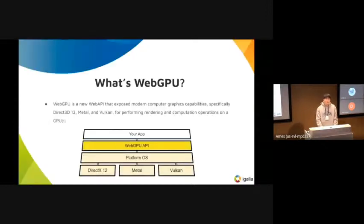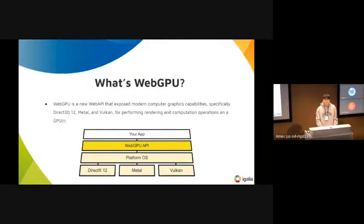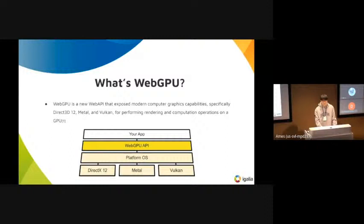First, WebGPU is a new web API that exports modern computer graphics capabilities, specifically Direct3D on Windows, Metal on Mac, and Vulkan on Linux, Chrome OS, and Android, for performing rendering and computation operations on our GPUs.